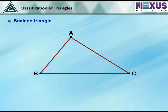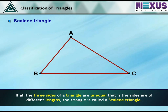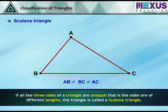Scalene triangle: if all three sides of a triangle are unequal, that is, the sides are of different lengths, the triangle is called a scalene triangle.